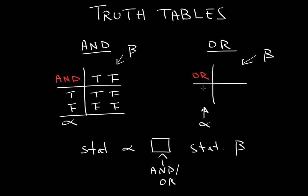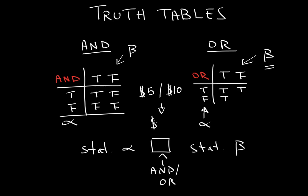Now let's create the truth table for "or." Statement alpha can be true or false and statement beta can be true or false. True or true gives true. True or false gives true. False or true gives true — as you understand from the clerk example. However, if it's false or false, you asked for $5 or $10 notes and she gives you a $20 note — you're obviously going to be mad. So false or false gives false. That's the truth table for "and" and "or."